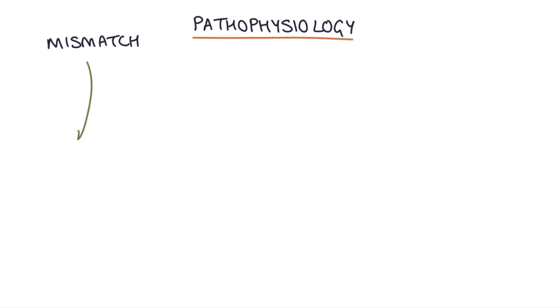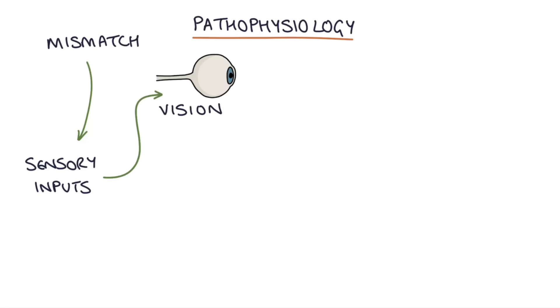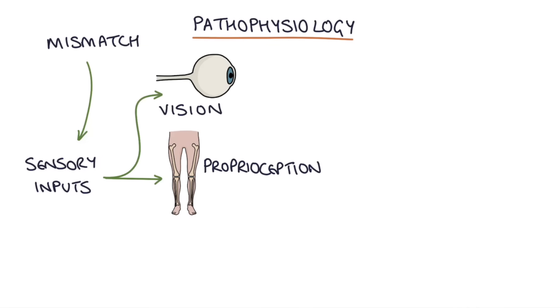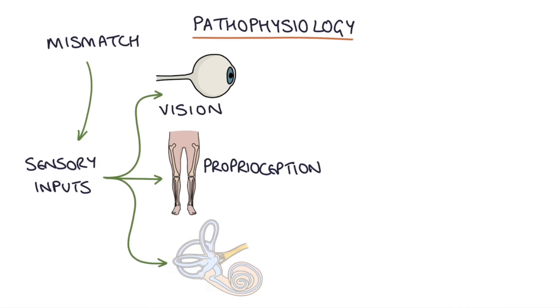So let's go through the pathophysiology of vertigo. Vertigo is caused by a mismatch between the sensory inputs that are responsible for maintaining your posture, and these inputs are vision from your eyes, proprioception from your joints, and signals from the vestibular system.